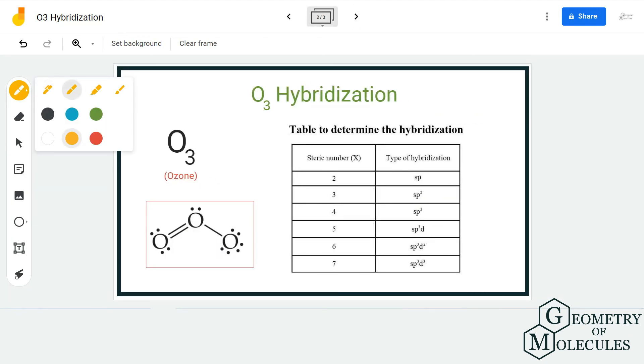when you look at this table you can see that the steric number three corresponds to sp2 hybridization, which means that this central oxygen atom needs to have three hybrid orbitals in order to accommodate all the bonding and non